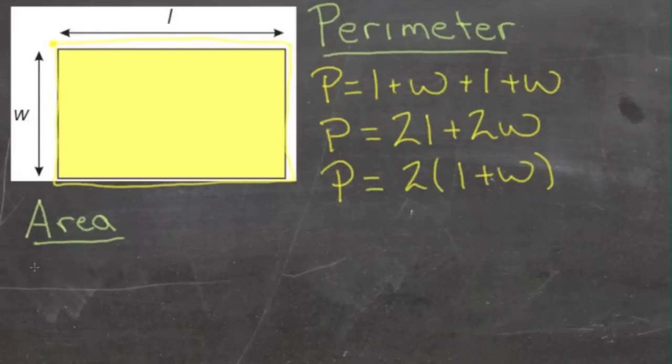So we have the length of the rectangle, L, multiplied by the width of the rectangle, W, equals our area.